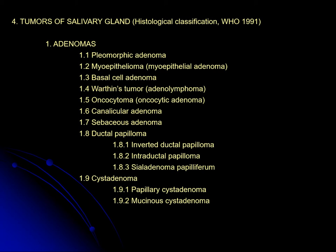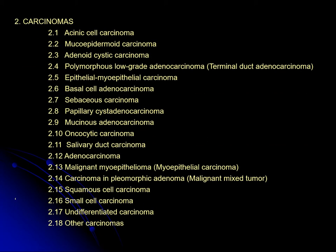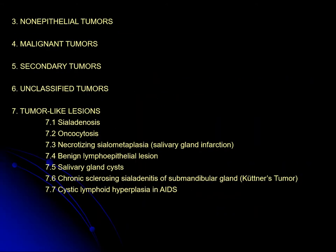Tumors include benign types such as pleomorphic adenoma, Warthin's tumor, and basal cell adenoma. Malignant tumors include mucoepidermoid carcinoma, adenocystic carcinoma, basal cell adenocarcinoma, salivary duct carcinoma, and squamous cell carcinoma. Non-epithelial tumors, melanin tumors, secondary tumors, and tumor-like lesions such as oncocytoma and metaplasia are also recognized.